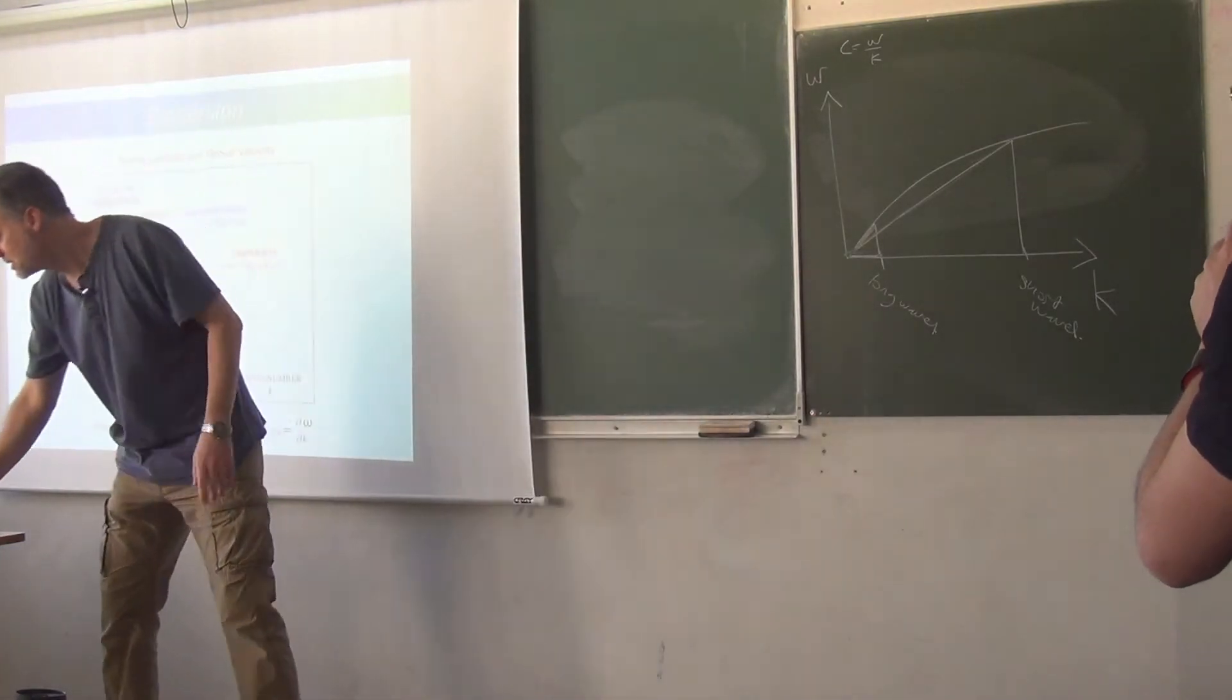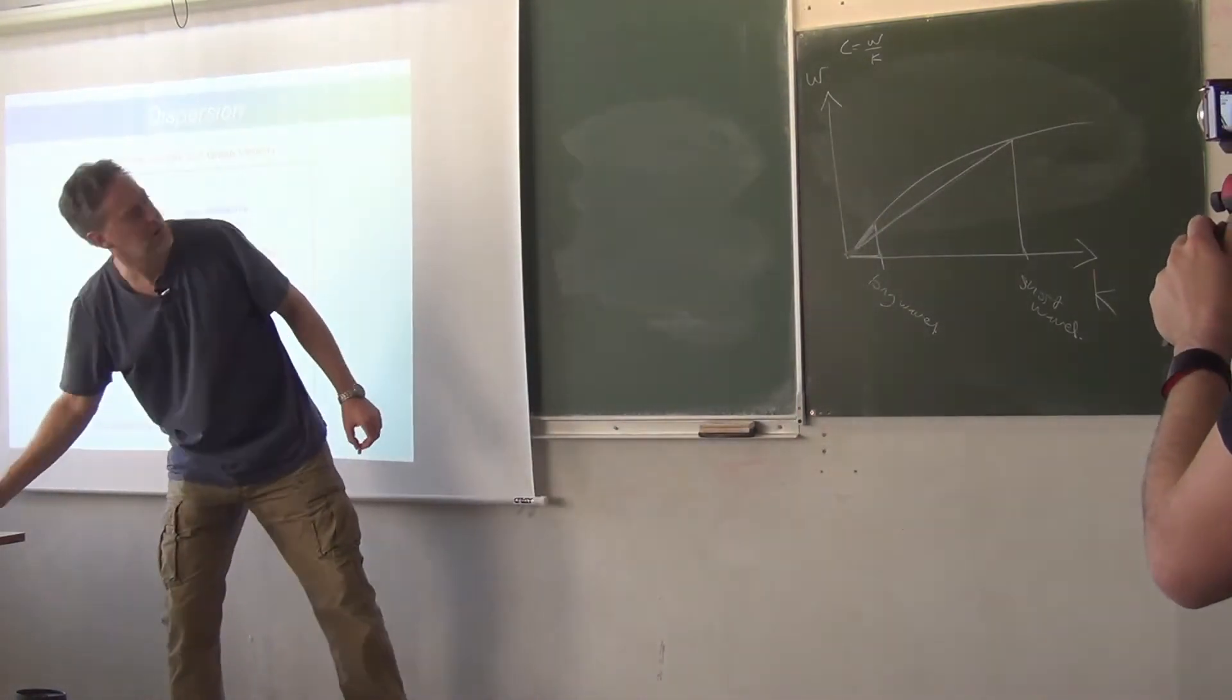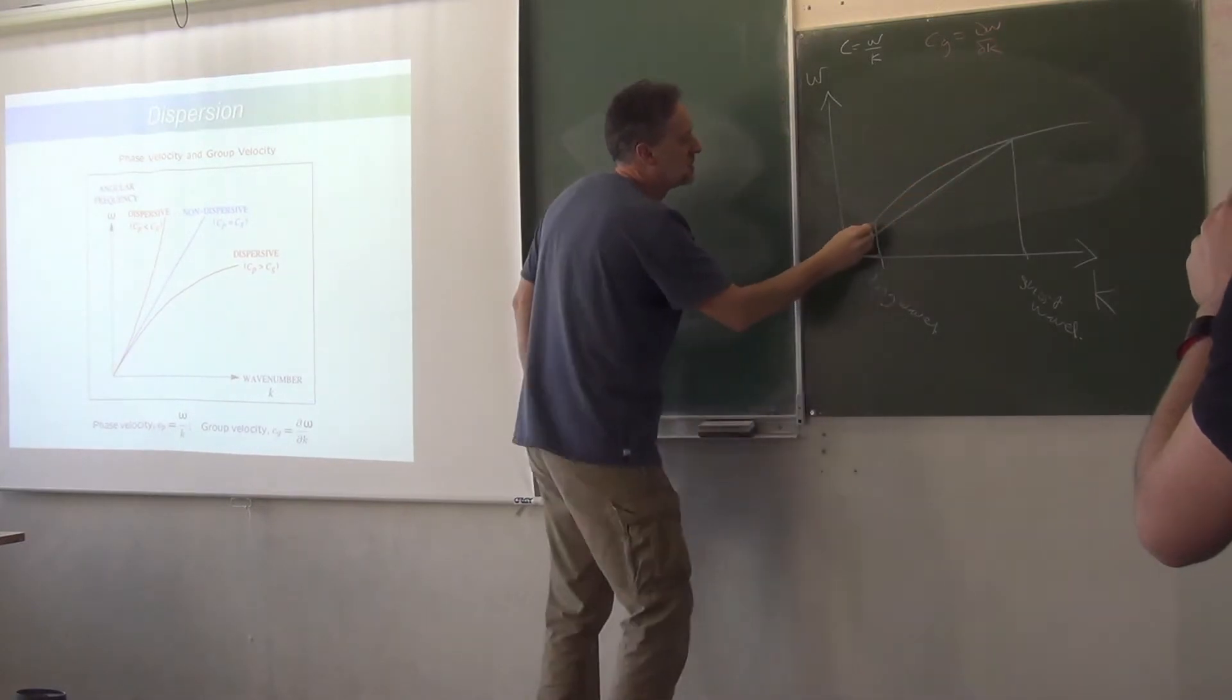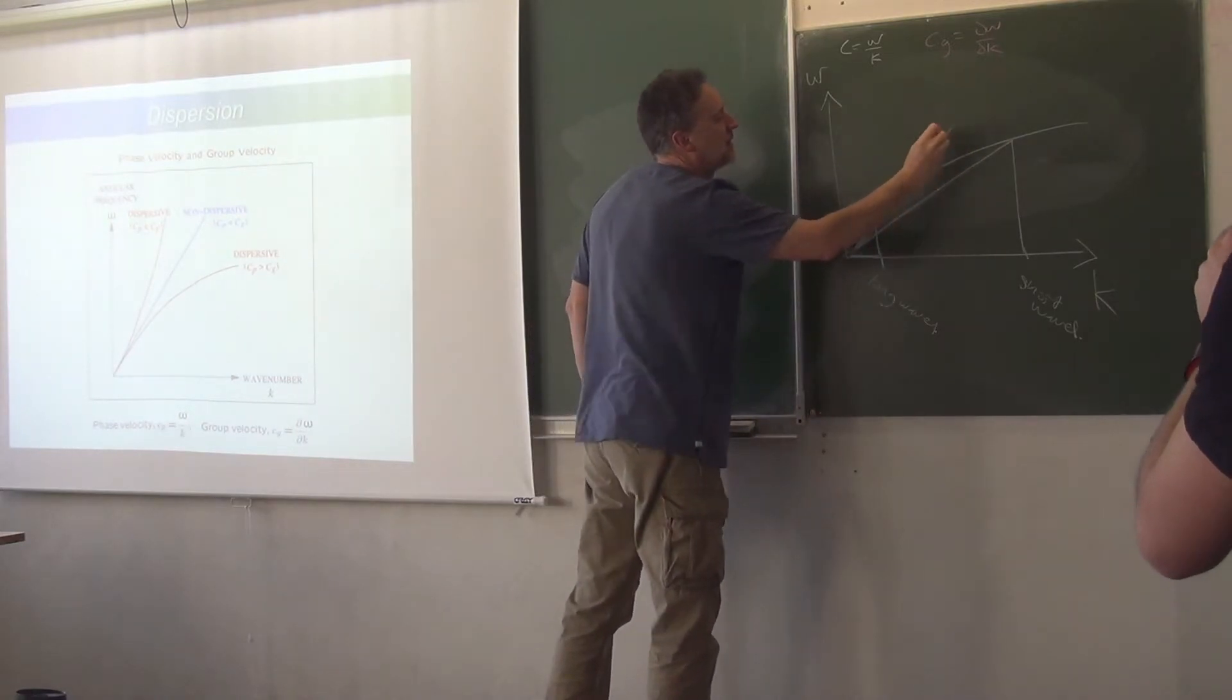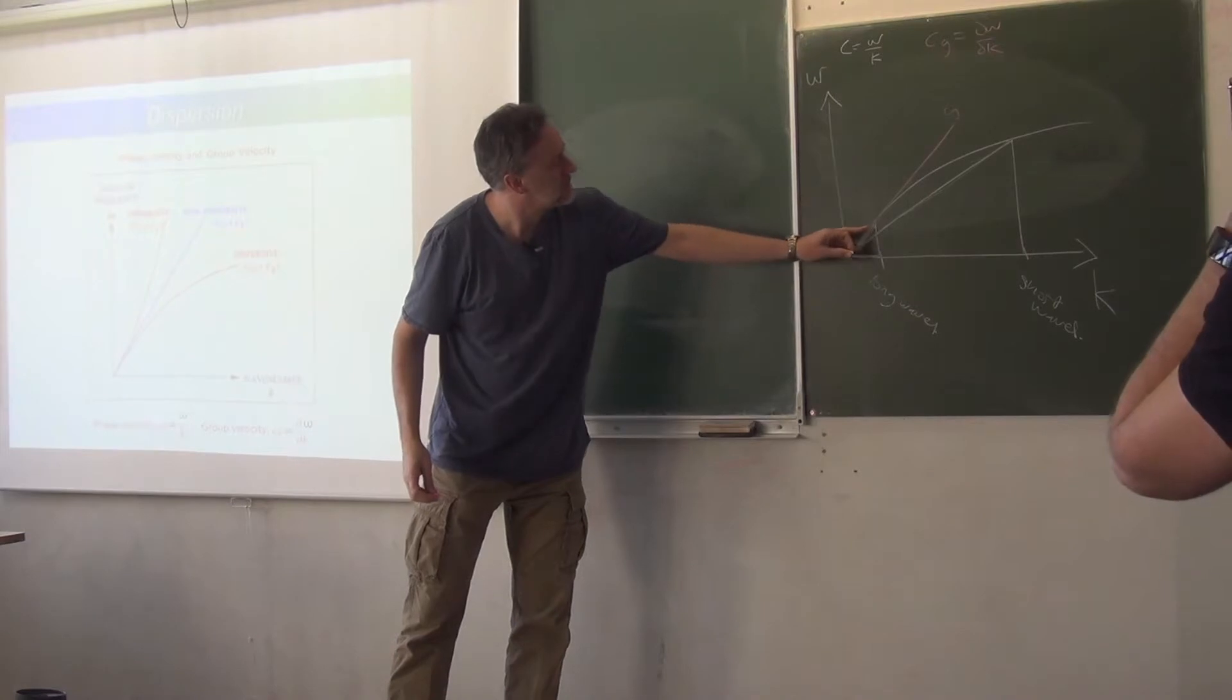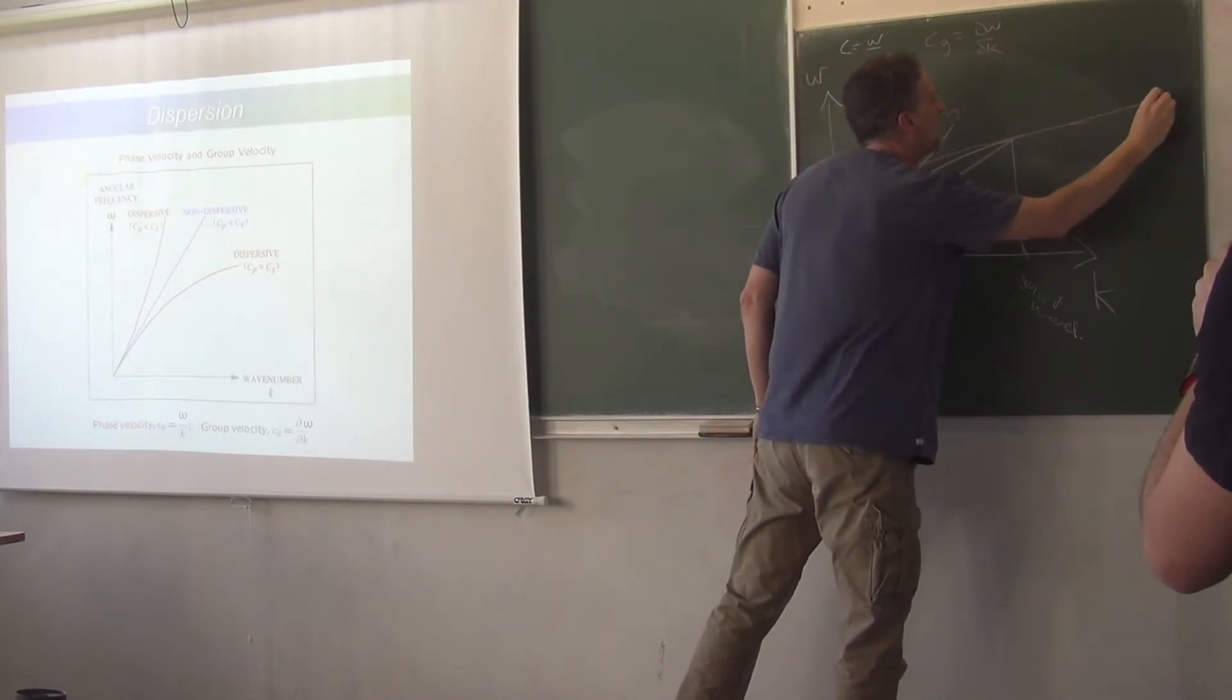How about the group speed? What is the group speed going to give us in this situation? Well, the group speed is the tangent to this curve. So, the group speed, we can write as CG equals d omega by dk. So, we want to draw the tangent here. That will give us CG. And so, for the long waves, the group speed is this. For the short waves, it'll be the tangent here, at this point here.